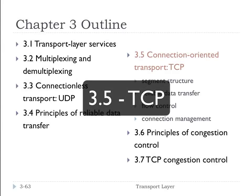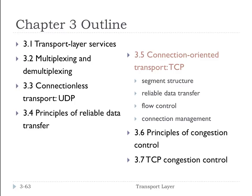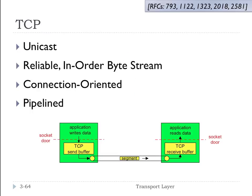We're going to talk about section 3.5 TCP, which is a connection-oriented transport protocol. We're going to see in this section how TCP actually implements the principles of reliable data transfer to provide that for the real world, for the internet. We're going to look at TCP in terms of its segment structure, how it does reliable data transfer, how it does flow control, and how it does connection management.